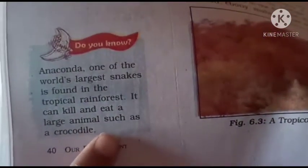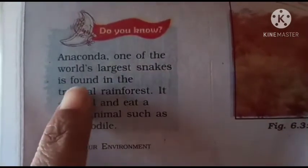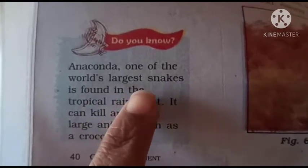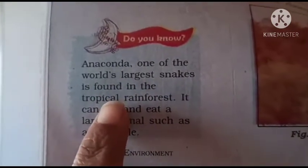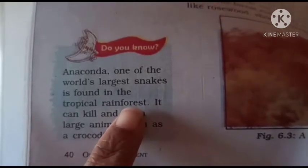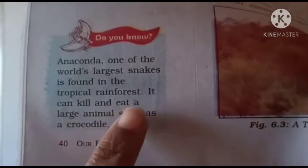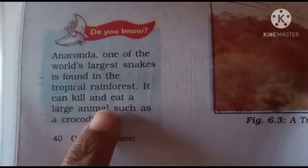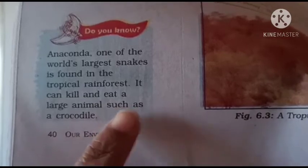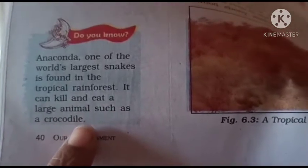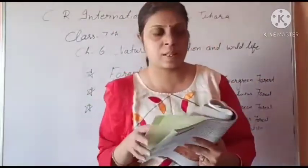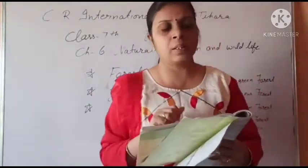Do you know? Anaconda, one of the largest snakes, is found in the tropical rainforest (اونشت کٹی بندیہ ورشہ ونوں میں). It can kill and eat a large animal such as a crocodile — یہ بڑے سے بڑے جانور جیسے کہ ایک مگرمچھ کو مار کر بھی کھا سکتا ہے۔